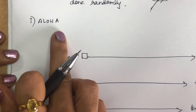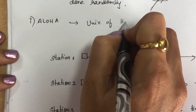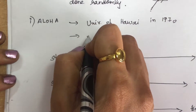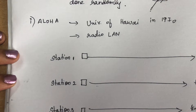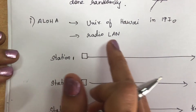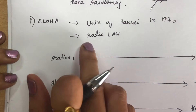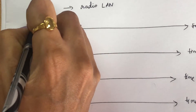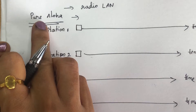The first method we are going to see is ALOHA. ALOHA was introduced at the University of Hawaii in 1970 and was designed for radio LAN. We will see pure ALOHA, which is one type of original ALOHA protocol — it is a very elegant protocol. Whenever each station wants to send a frame, it can use any one of the channels and send the frame.